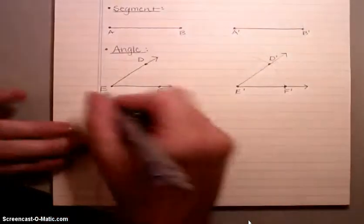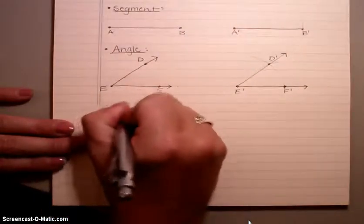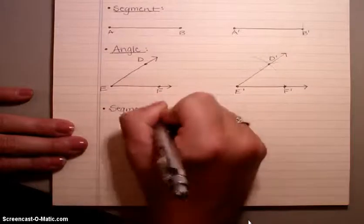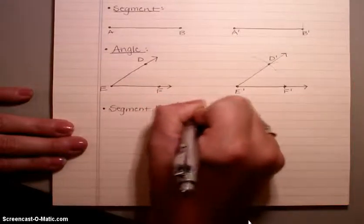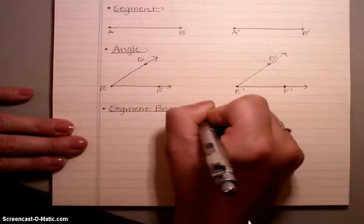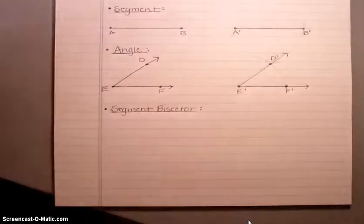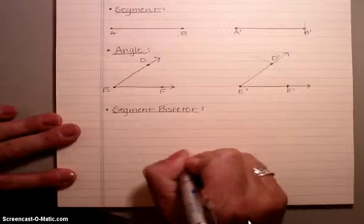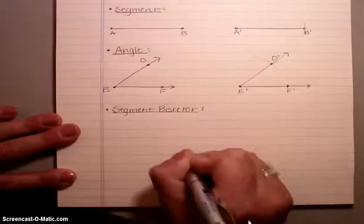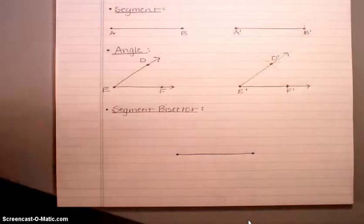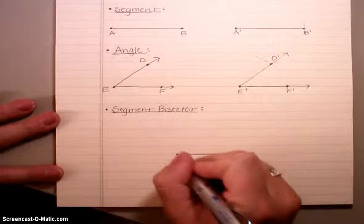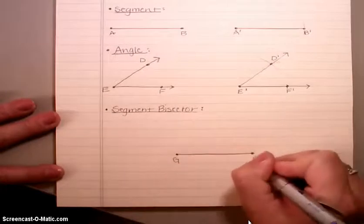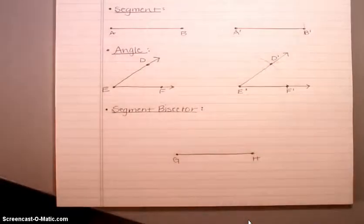Next I'm going to show you how to construct a segment bisector. A bisector means it's going to cut the segment in half. So we need to start with a segment — leave yourself room above and below, and don't make it too wide. I'll call this segment GH.